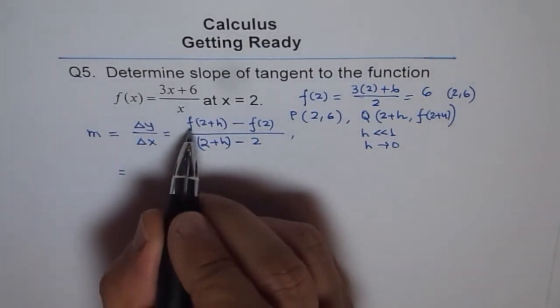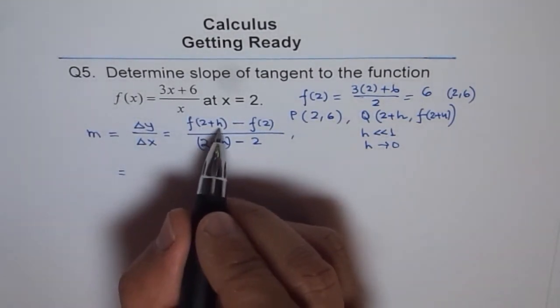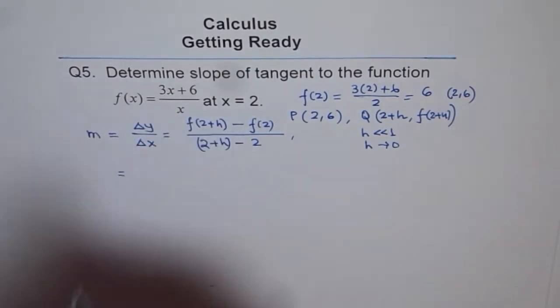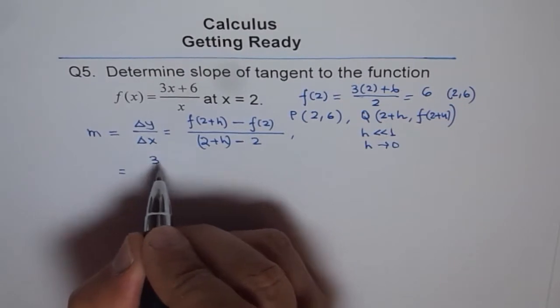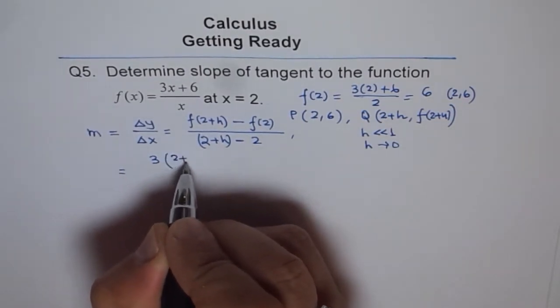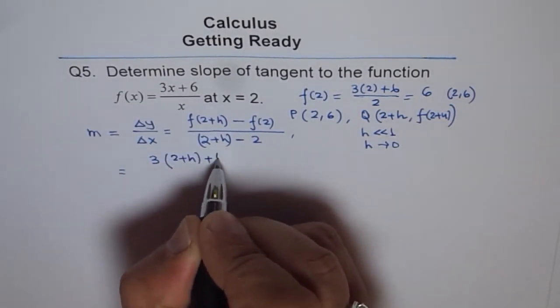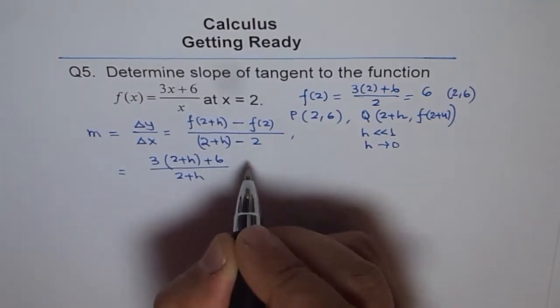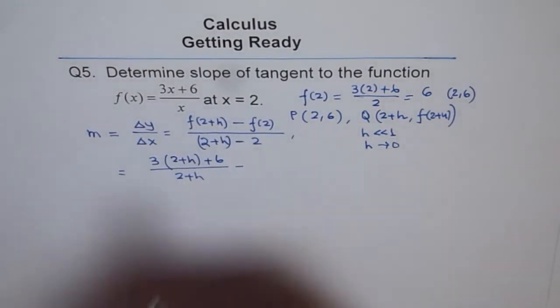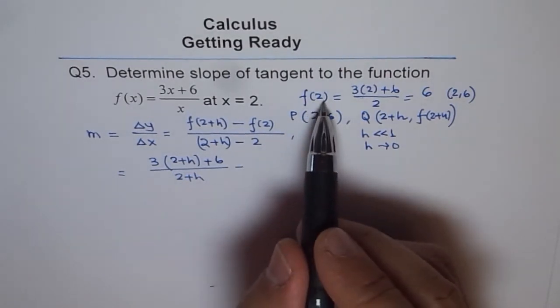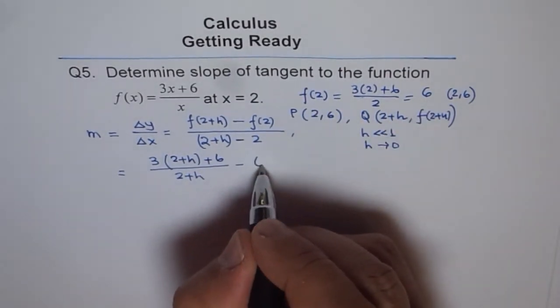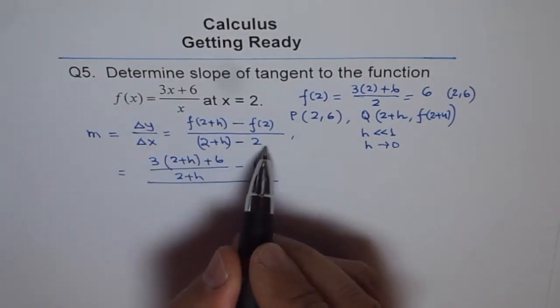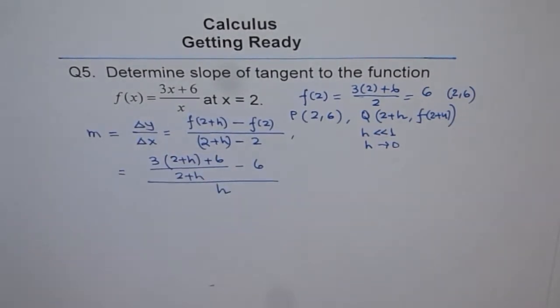Now let us see how to find f(2 + h). (2 + h) means you have to replace x with (2 + h). So we will write here 3(2 + h) + 6 divided by (2 + h) minus f(2). And f(2) we calculated is 6, divided by (2 + h) minus 2, which gives us h.